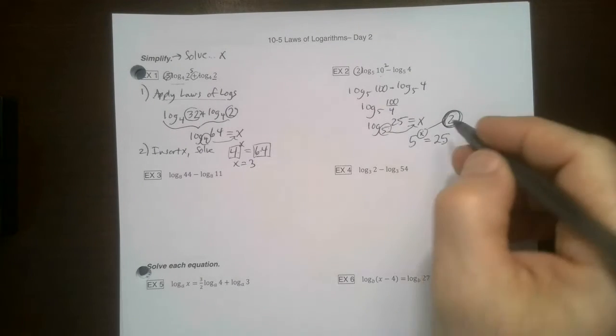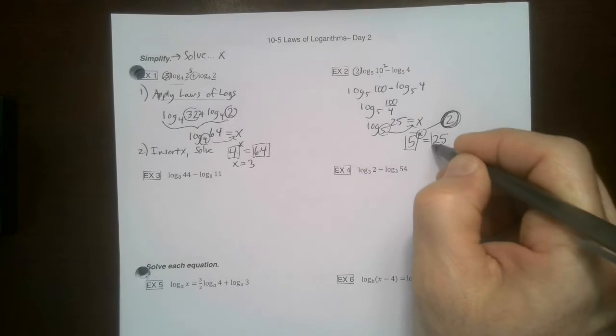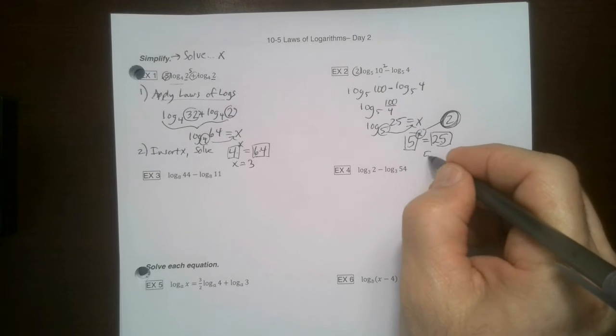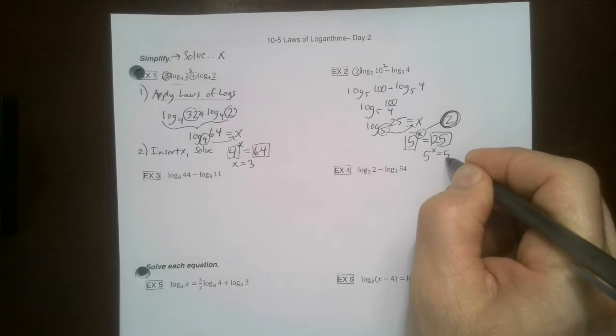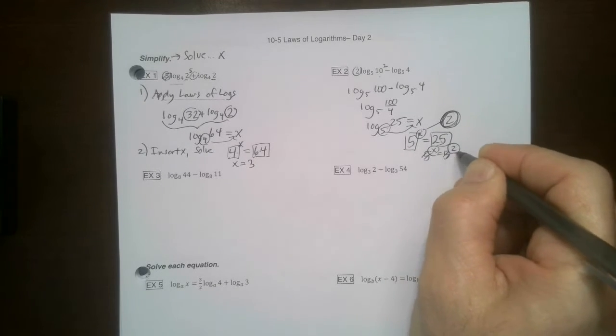All right. But if you like the common bases happy places, go for it. So that 5 is going to stay. That 25 is going to go 5 squared. And then the 5 just disappear. X equals 2.